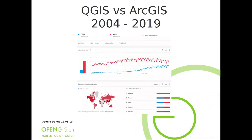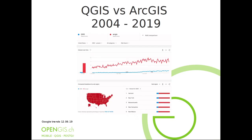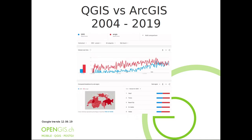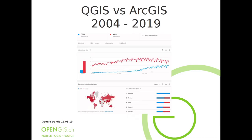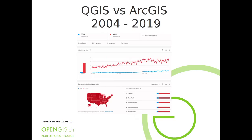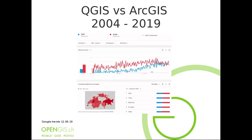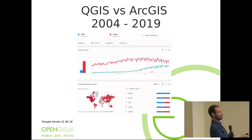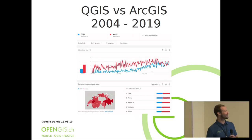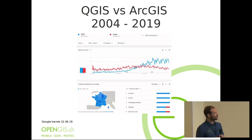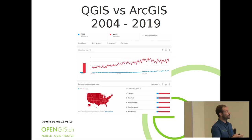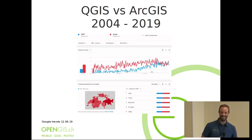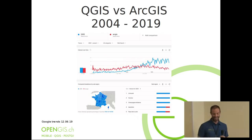Somebody told me that in a presentation you always need a trending chart going up. So obviously I took QGIS versus ArcGIS from 2004 to 2019 and animated it using Google Trends, which shows what people are searching for. You can see Switzerland is at a key moment right now — going over. France passed a long time ago. And then there are some countries like the USA where inexplicably ArcGIS is still very much the leader product.